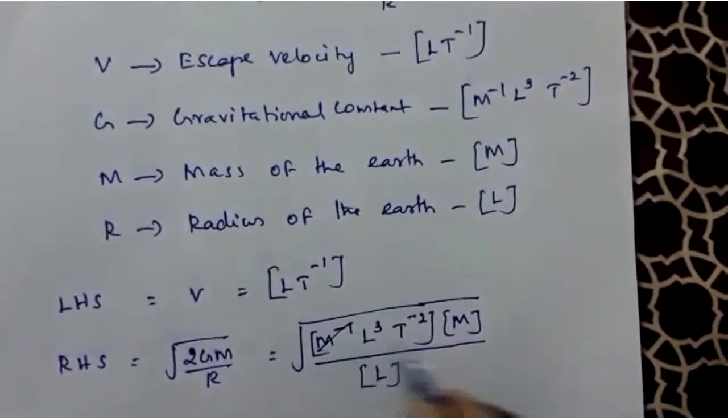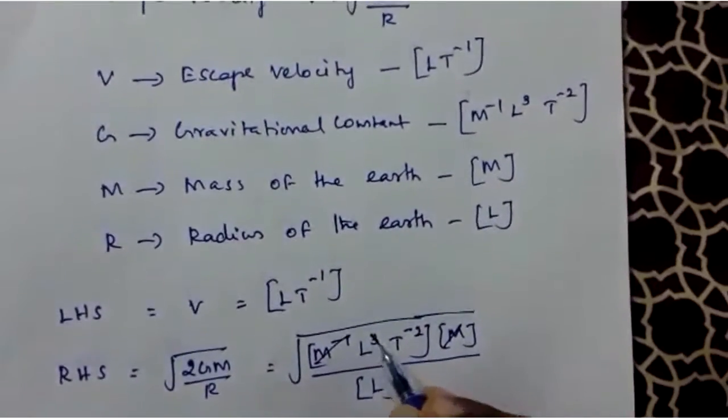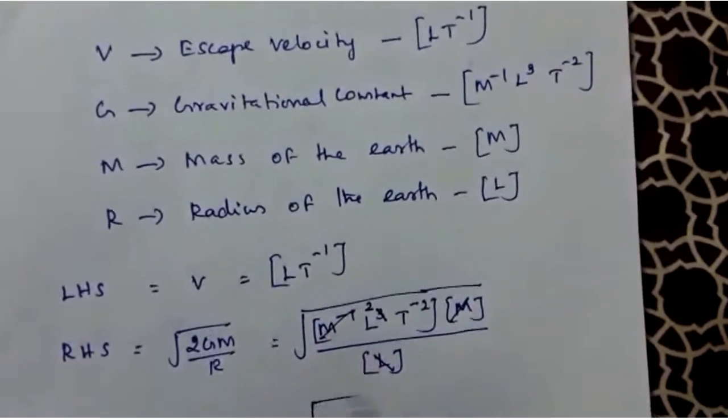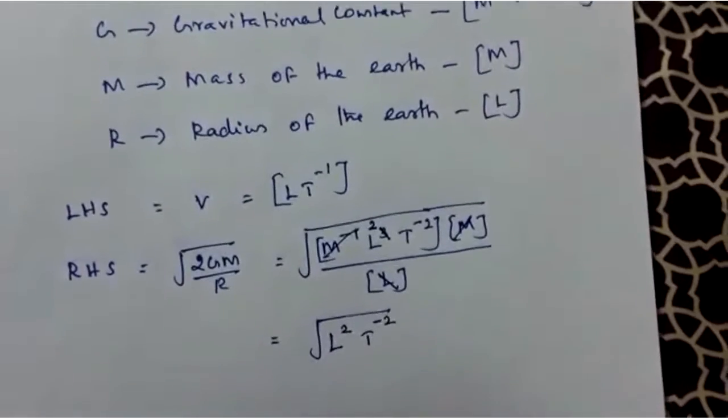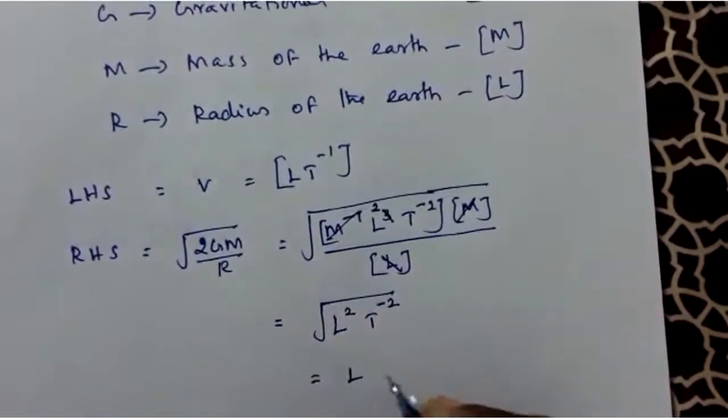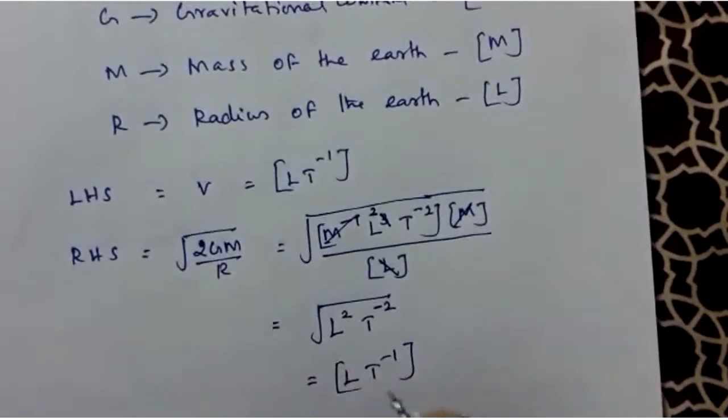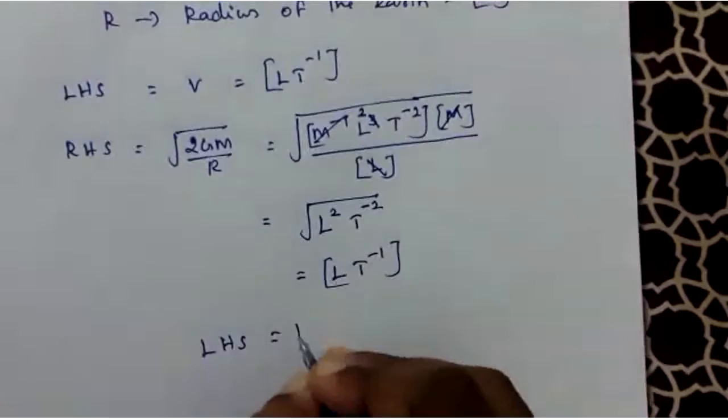Here M^-1 and M cancel. L^3 and L combine to become L^2. Now it is root of L^2 T^-2. Taking outside the root, it is [LT^-1], which is the same as the left-hand side.